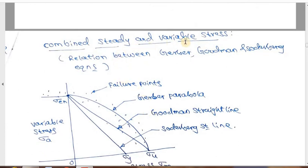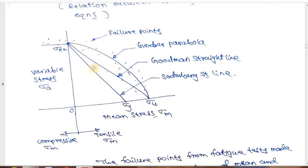Now we consider the combined study of mean and variable stress, relating them through the Gerber, Goodman, and Soderberg equations. On this graph, the y-axis is variable stress sigma_a and the x-axis is mean stress sigma_m. The endurance limit sigma_en is marked on the y-axis and the ultimate stress sigma_u is marked on the x-axis. Connecting sigma_en to sigma_u by a parabolic curve gives what is called the Gerber parabola. Connecting the same two points by a straight line gives the Goodman straight line.